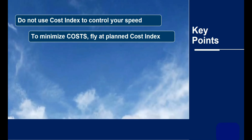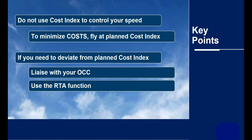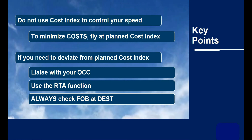To summarise: Cost Index is purely an exchange rate equating the cost of time to the cost of fuel — it is not a speed control mechanism. By sticking to your flight plan Cost Index, you will fly at minimum cost, not the same as minimum fuel burn. So in the cockpit, do not improvise. Lastly, if there is an additional issue like a time constraint, you can consider changing your cruise speed — but to make this decision you might need help from your OCC. Use the RTA function, but always check fuel on board at destination. If you change plan, have you got enough fuel on board?